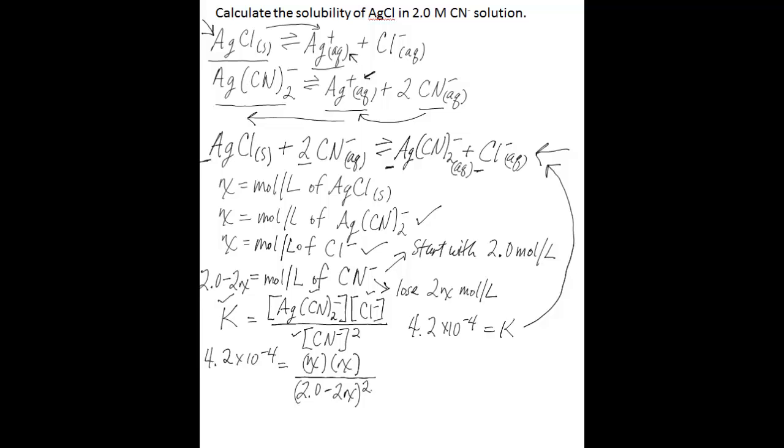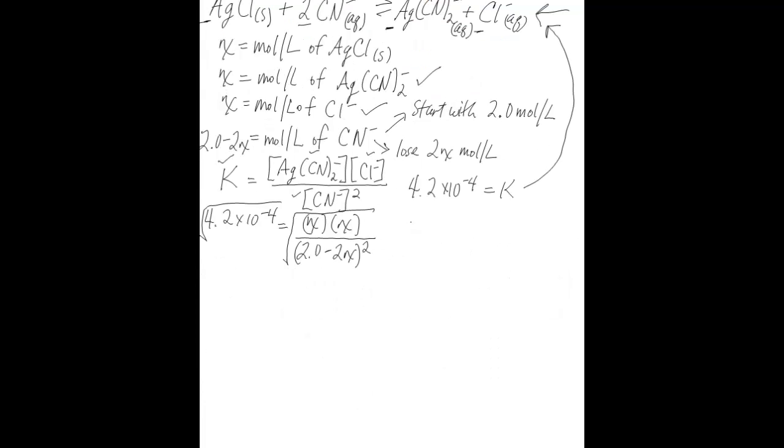So what we can do to start solving this, the first thing we can do is take the square root of both sides. So when we do that, what we're going to be left with is 0.02049 is equal to X divided by 2.0 minus 2X. And then to further solve, we'll be moving on to say 2.0 minus 2X multiplied by 0.02049 is equal to X.